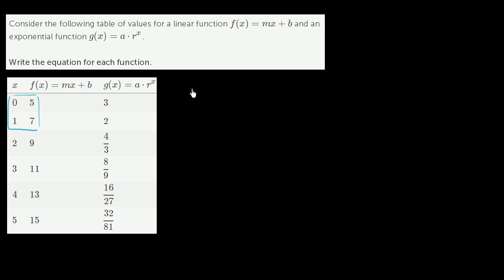For example, we can say that f(0) is going to be equal to m times 0 plus b, or this is just going to be equal to b. They tell us that f(0) is equal to 5, so b is equal to 5. We immediately know that this b right here is equal to 5.